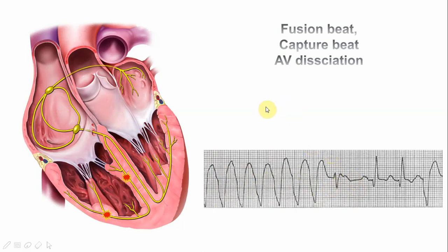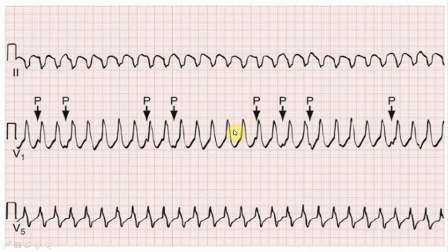Looking at this ECG in lead V1 and V5: there is a wide QRS complex coming at a rate of about 160–170 beats per minute, pretty regular. There is a little notch that is actually a P wave — you can see multiple P waves with no relationship to the QRS complexes. That is classic AV dissociation. With a wide complex tachycardia and AV dissociation, this is VT until proven otherwise.